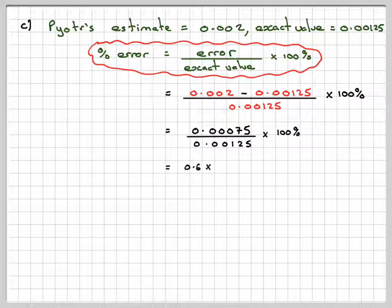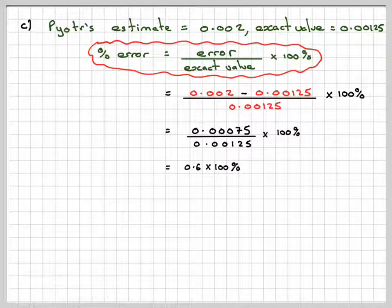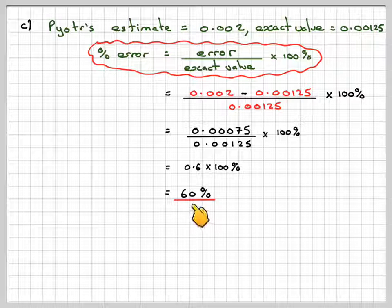And that will give me 0.6 times 100%, which gives a percentage error of 60%.